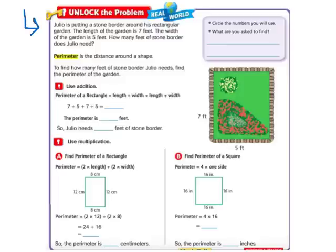It says Julio is putting a stone border around his rectangular garden. The length of the garden is 7 feet. The width of the garden is 5 feet. How many feet of stone border does Julio need? Then it gives us the definition of perimeter. It says perimeter is the distance around a shape.